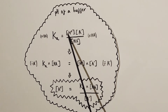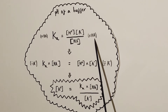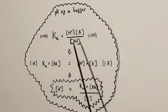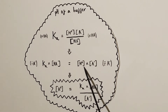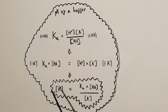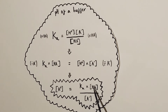Here's our Ka expression: Ka is equal to H+ times A- over HA. If we multiply both sides of the equation by the concentration of weak acid HA, that removes the division and leaves us with Ka times HA equals H+ times A-. Then if we divide both sides by the concentration of A- (conjugate base), that leaves us with hydrogen ion concentration on its own. So hydrogen ion concentration equals Ka times the weak acid concentration divided by the concentration of A-.